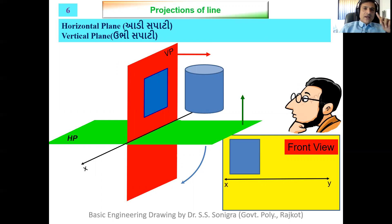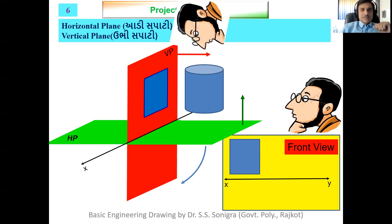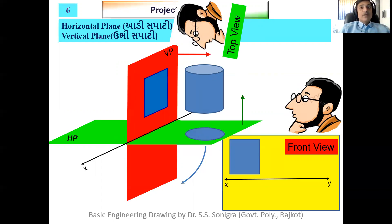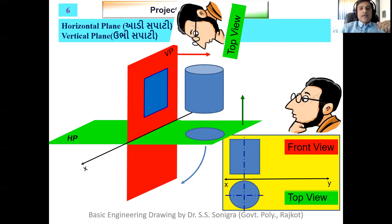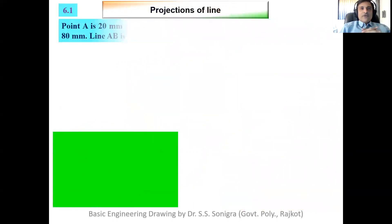Looking from the top gives the top view, where the cylinder appears as a circle. This circle will be below the XY line since the object is in the first quadrant. If the same cylinder were in the third quadrant, its front view would be below the XY line and its top view would be above the XY line.